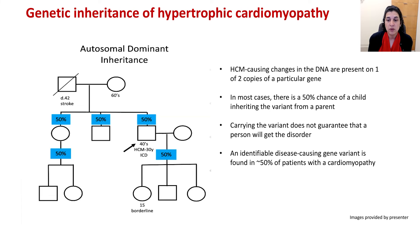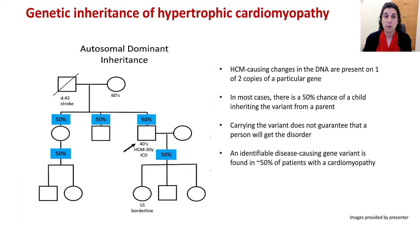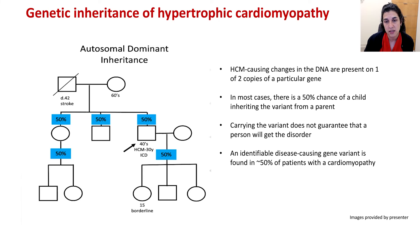An identifiable disease-causing genetic change is found in about 50 to 60 percent of people with a cardiomyopathy. Genetic testing can be very helpful in informing not just the patient about their condition, but importantly the rest of the family about their own risk for developing disease in the future.